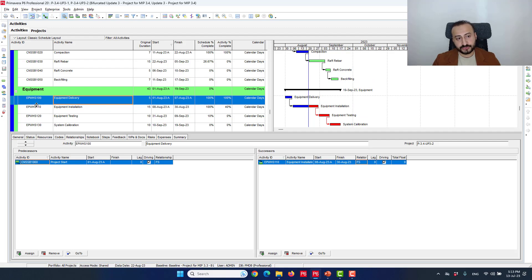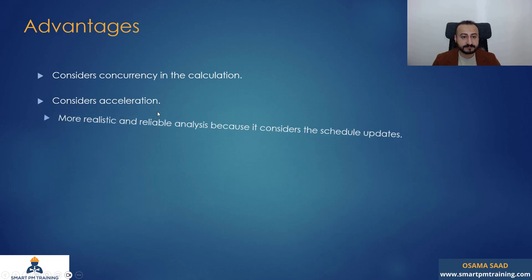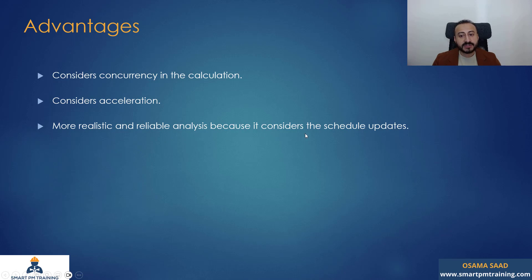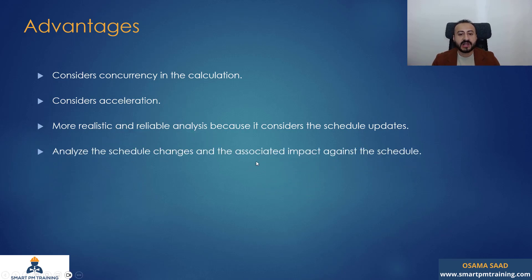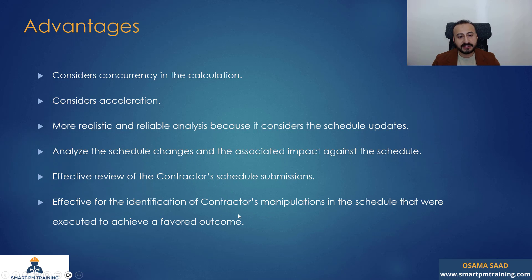So there are many questions here, and that's the purpose of this method. The advantages: it can consider concurrency in the calculation because you have a window analysis, so it is easy to see how the contractor is progressing throughout the project and determine concurrent delays. It will consider acceleration as well. It's more realistic and reliable because it considers schedule updates and any shifting in the critical path. It analyzes schedule changes and their associated impact, and enables effective review of the contractor's schedule submissions and identification of contractor manipulations to achieve a favored outcome.